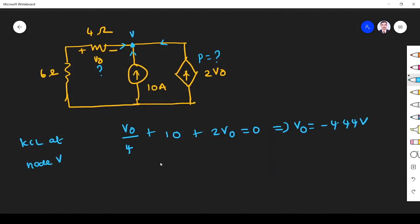So what is the current source value? Dependent current source value. Dependent current source value is 2V0. I found. From that I get this one, I.